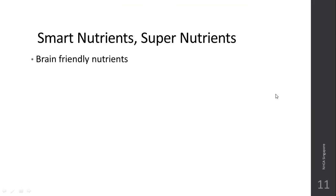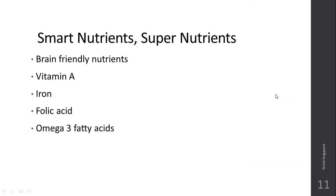Smart nutrients or super nutrients are brain-friendly nutrients. Vitamin A, iron, folic acid, and omega-3 fatty acids are considered smart nutrients. Foods rich in these nutrients are specifically important for a growing child's growth and development — these four major nutrients are critical for good intelligence quotient and emotional quotient of the child, as well as for nervous system development.